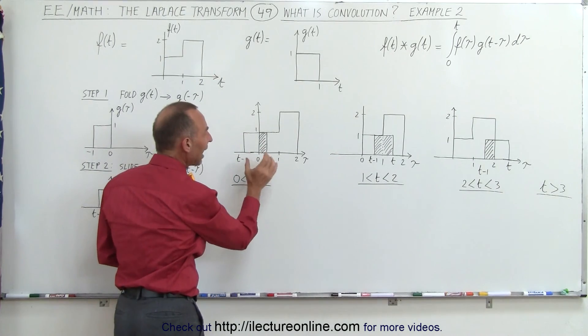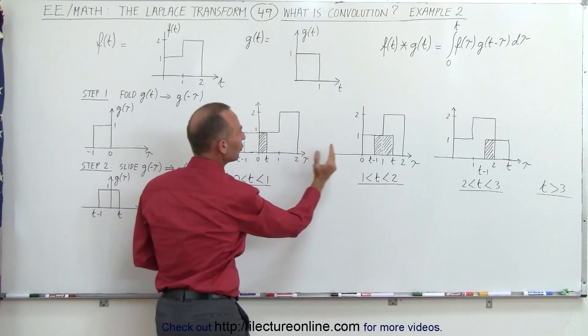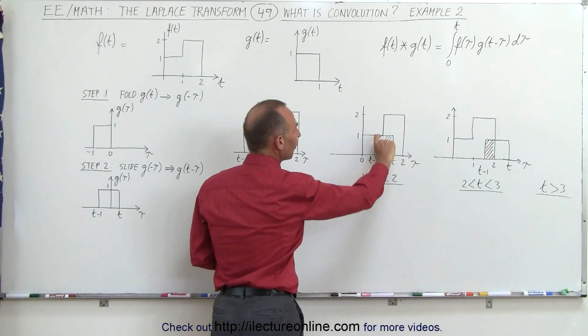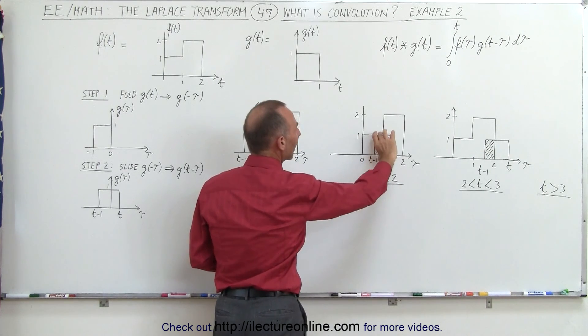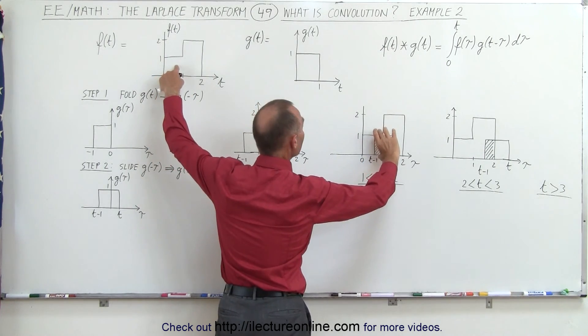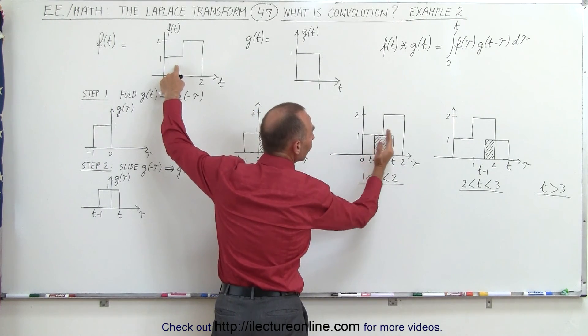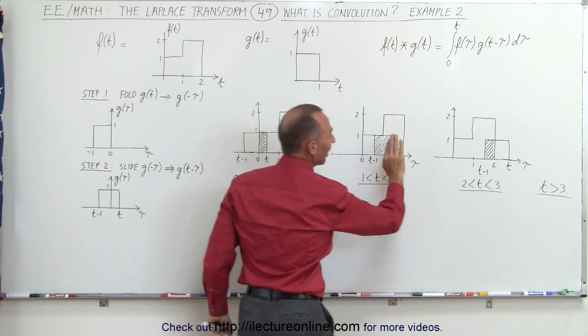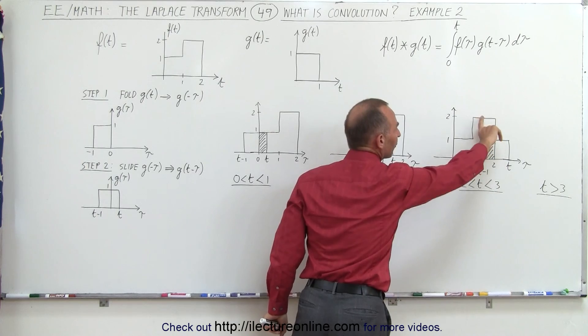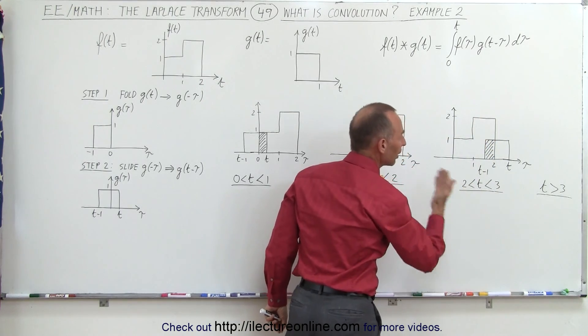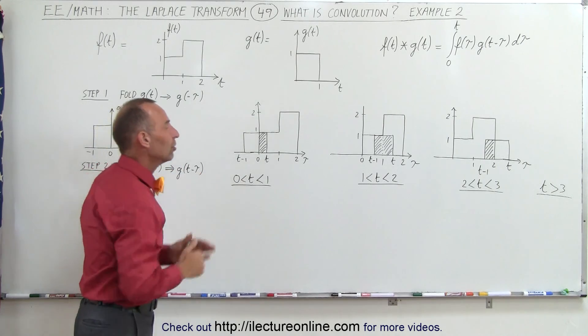So as we're sliding across, we're going to have an overlap between the two functions, but notice as it continues into this region, the overlap between f of t and g of t will be different. Here, the height of f of t will only be 1, and here the height of f of t will be 2, so we'll have to separate those two overlaps. And finally, we'll continue so that only a part of the overlap is between this back part of function f of t, and so then we can go ahead and calculate what the convolution is of each of these regions.